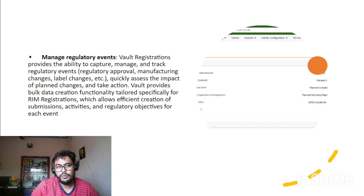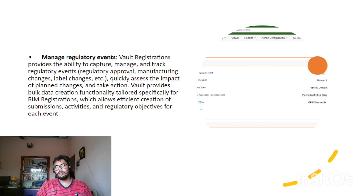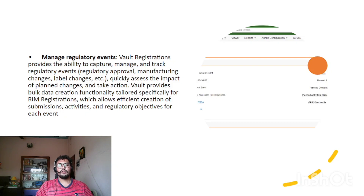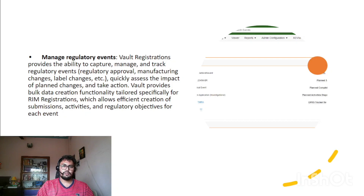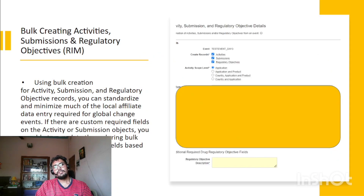Vault registration provides the ability to manage and track regulatory events including regulatory approvals, manufacturing changes, and label changes — all of which are part of the event object. It allows users to quickly assess the impact of planned changes and take action. It also provides bulk data creation functionality tailored specifically for RIM registration, which allows efficient creation of submissions, activities, and regulatory objectives for each event. From the event page you can create submissions, activities, and regulatory objectives, and link them with an application.